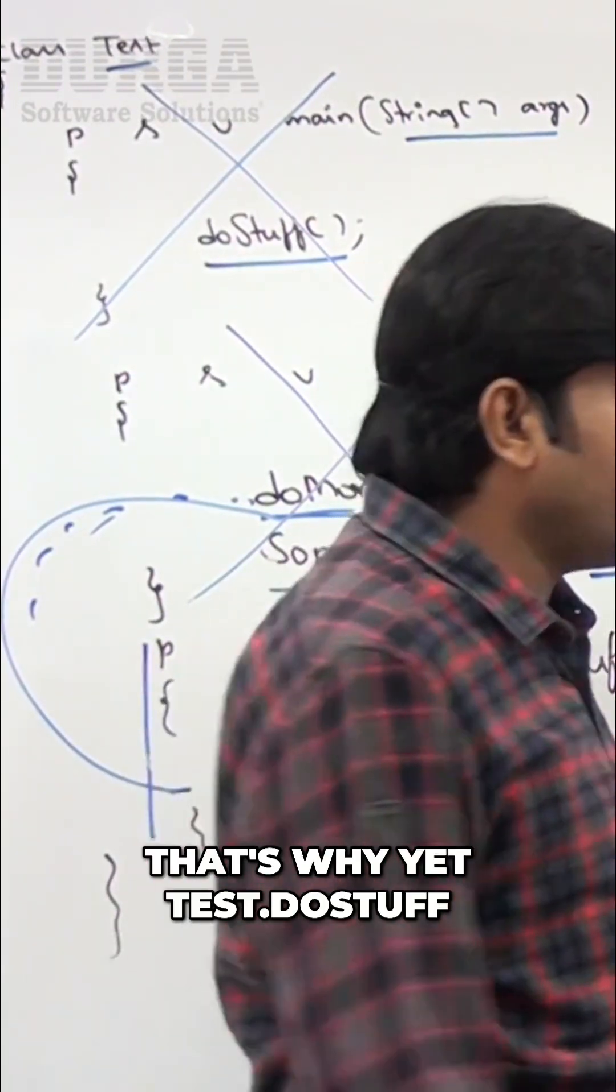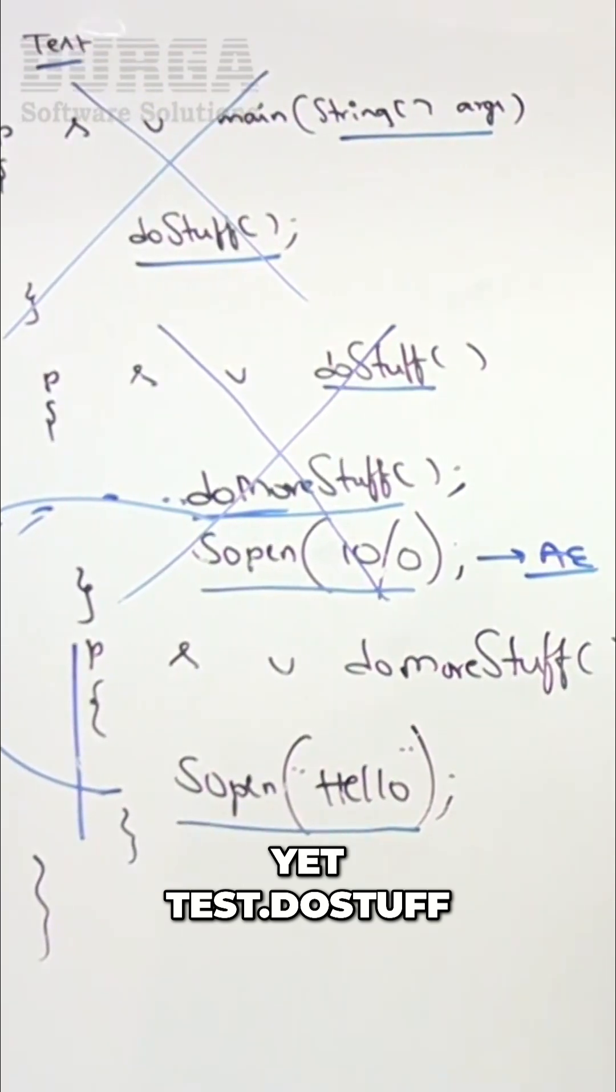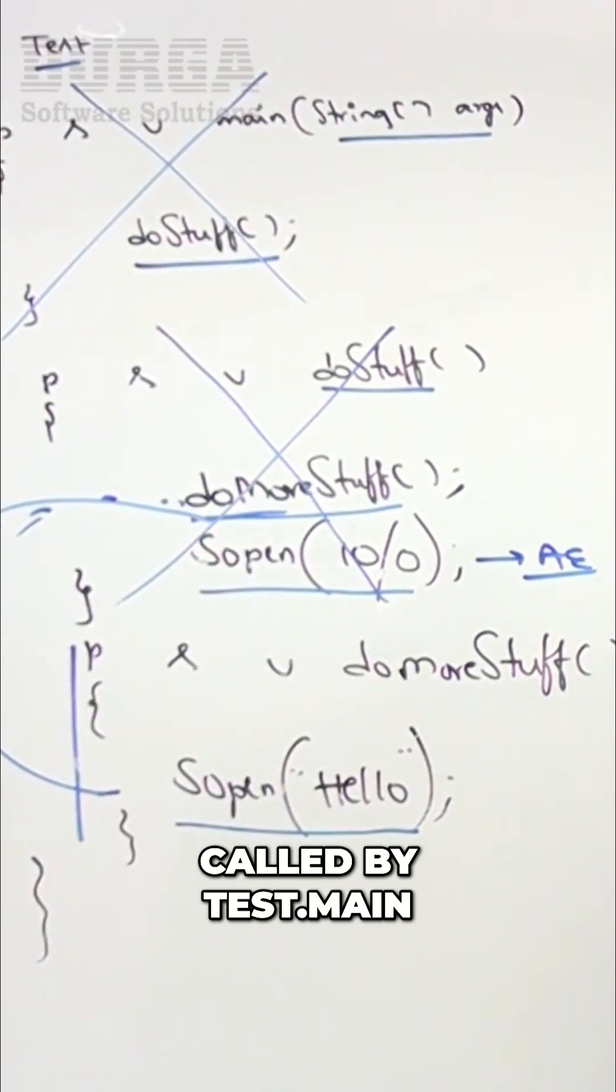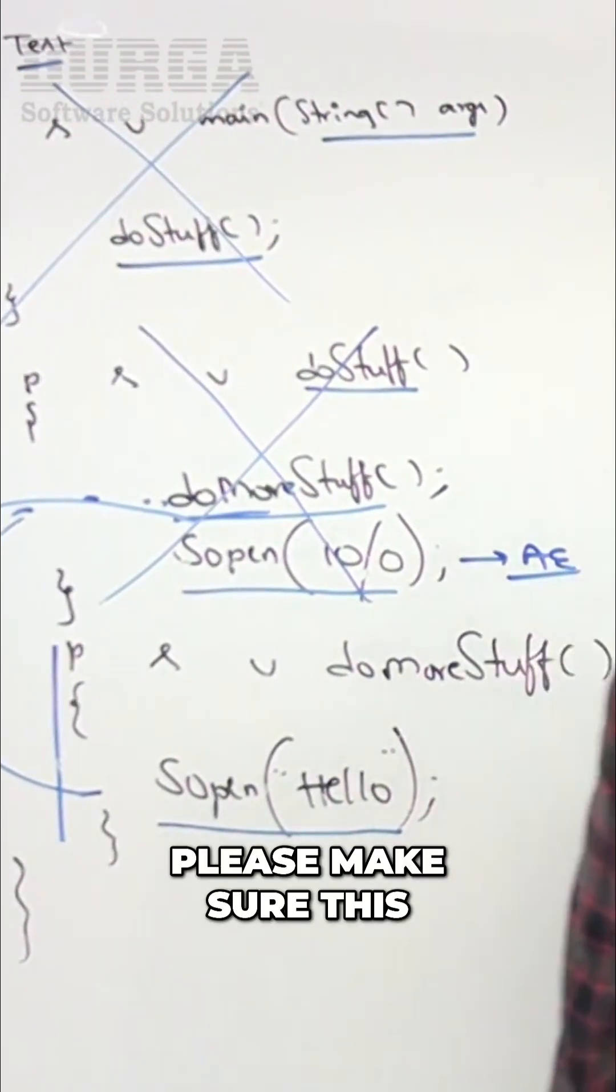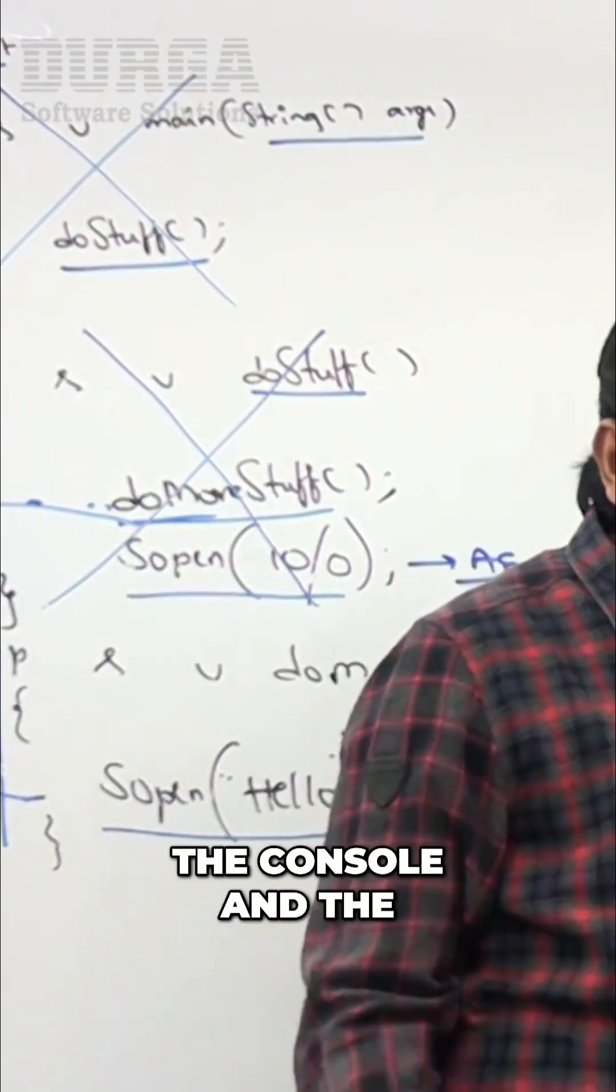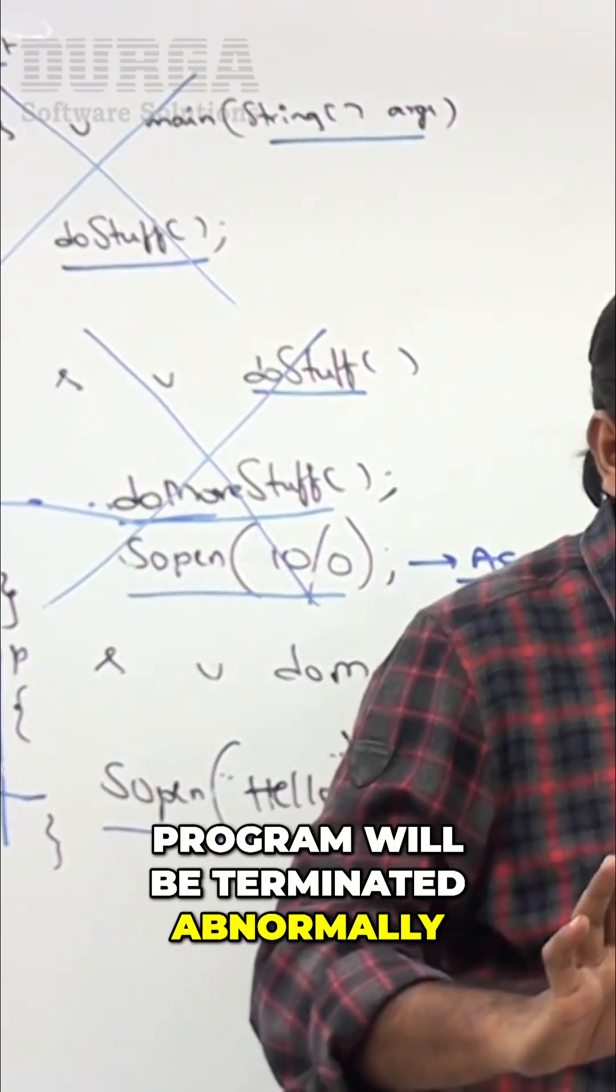The main method. That's why YetTest.doStuff - this doStuff is called by Test.main. Sir, please make sure this is the information that is going to print to the console, and the program will be terminated abnormally.